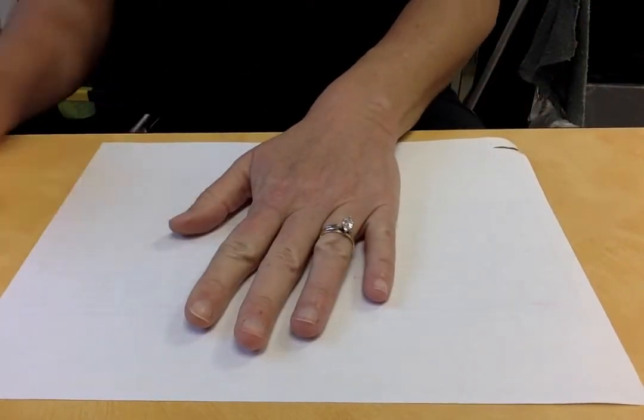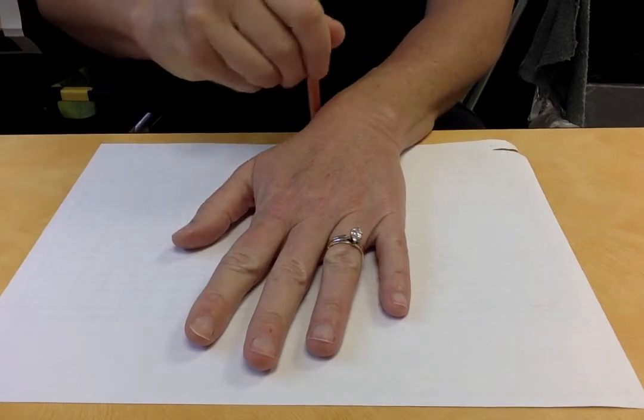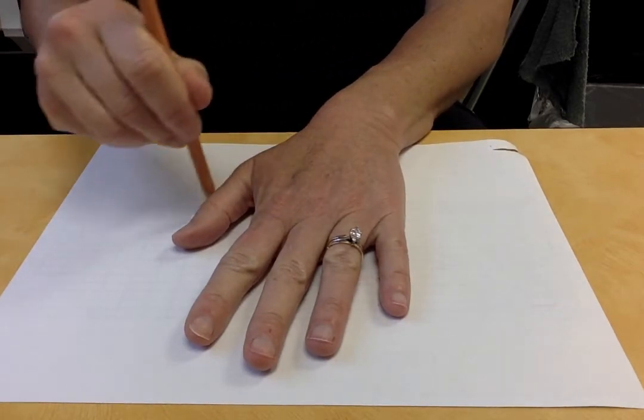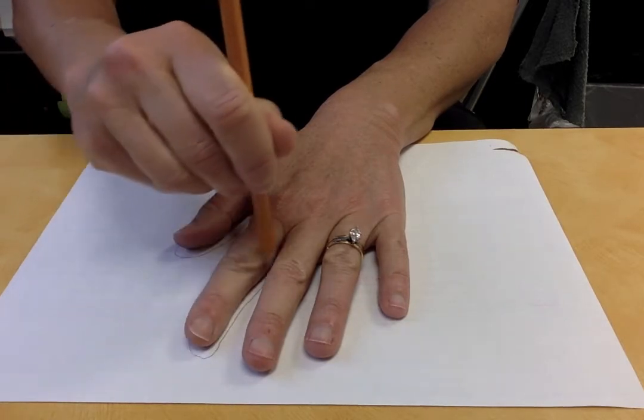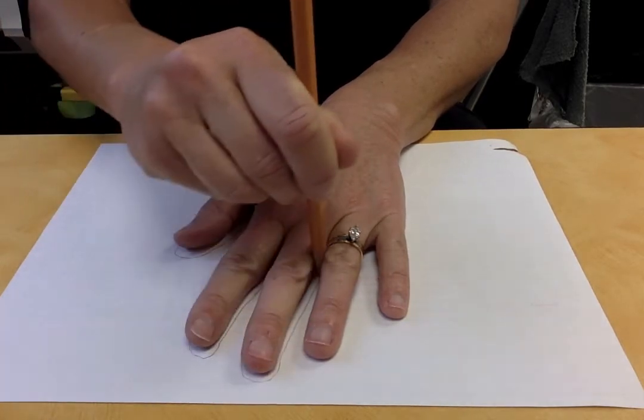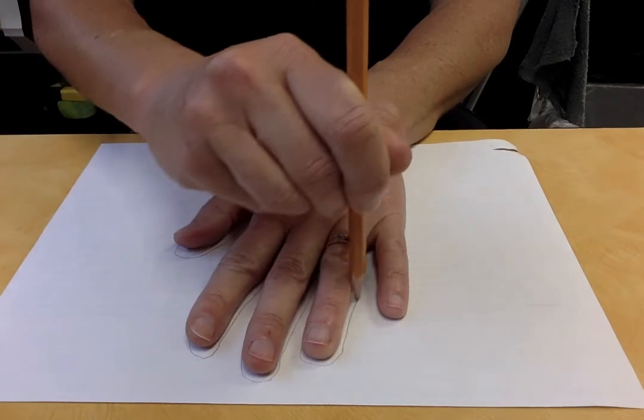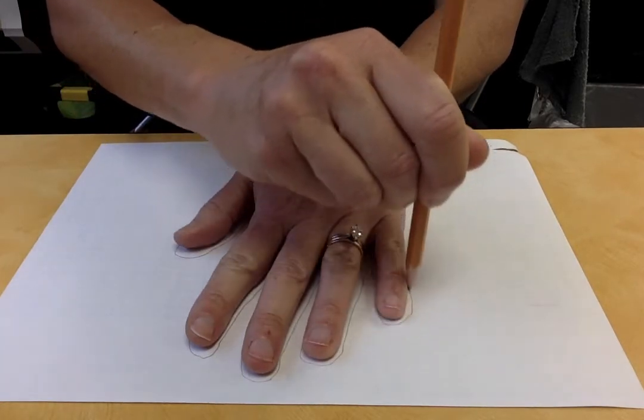I'm going to put my hand on my paper and I'm just going to trace it, starting at the bottom of the page. I'm going to trace my hand because we're not actually going to draw on our hands with henna.